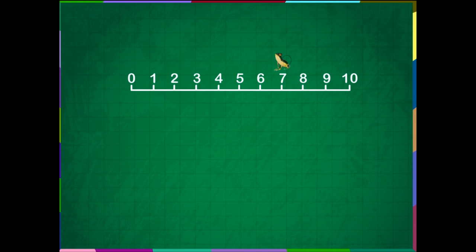Frankie the frog wants to subtract 5 from 7. He drew a number line from 0 to 10 as shown on the screen. He started jumping backwards from 7, 5 times. Frankie reached 2. So, the difference between 7 minus 5 is 2.